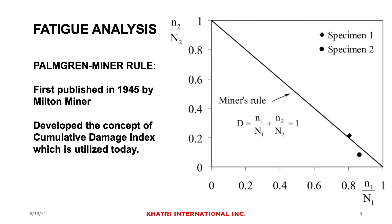The fatigue analysis protocol used in this industry was first published by Milton Miner in 1945. He developed the concept of the cumulative damage index, which is utilized today. The rule is fairly simple: we add up the cumulative damage per load cycle, or per bin as we call it. The sum total of all of those is the damage index, which must be less than one. The capital N in the denominator denotes the allowable cycles to failure, and the small n in the numerator is the actual applied demand cycles.